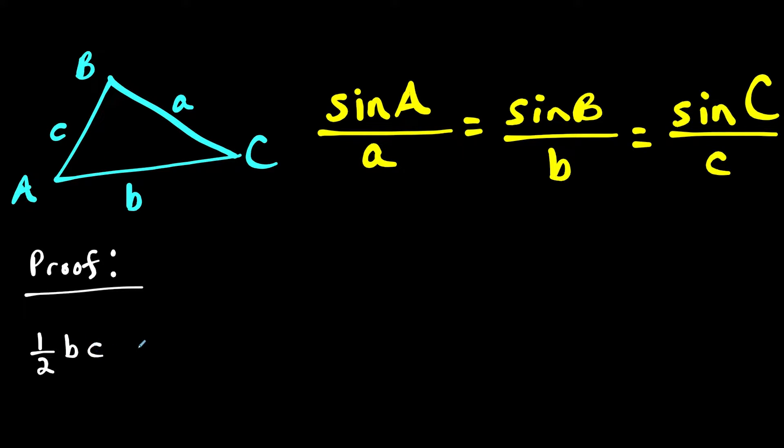I could say one half BC sine of the angle between them. So this is the area of triangle ABC. We'll emphasize that this is the area of triangle ABC, but there are three ways using this trig formula that we could express the area. Notice I used sides B and C.